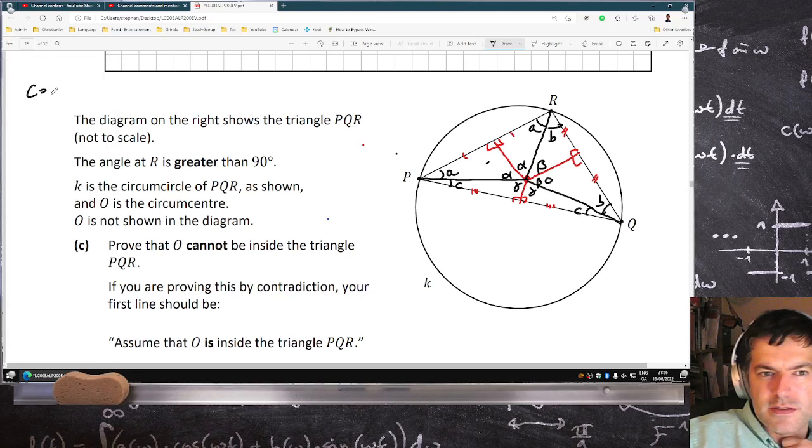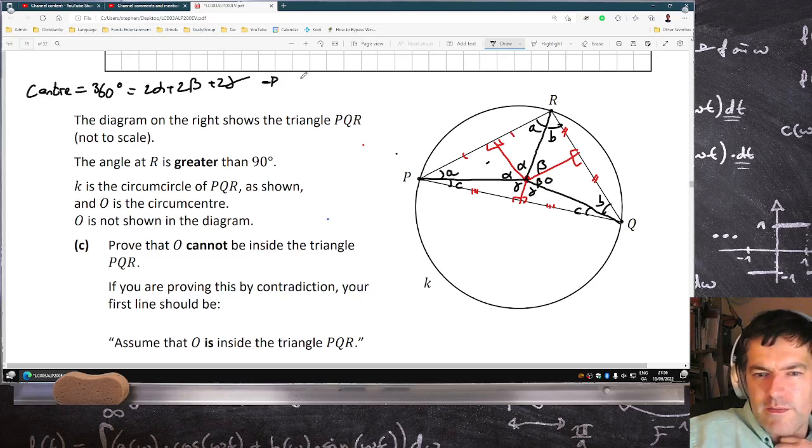The center has to equal 360, which has to equal 2 alpha plus 2 beta plus 2 gamma, which means that alpha plus beta plus gamma has to equal 180.